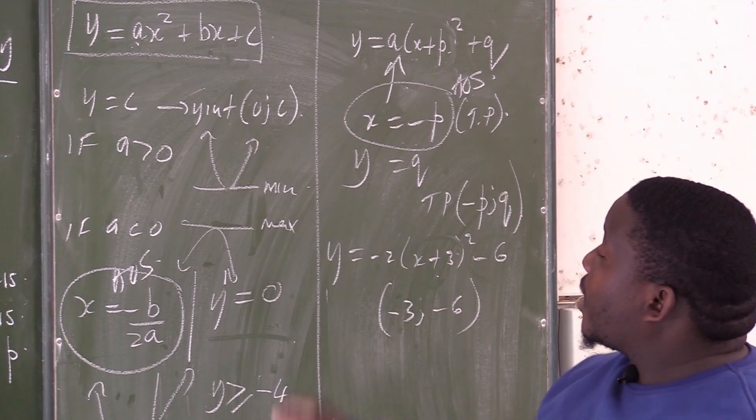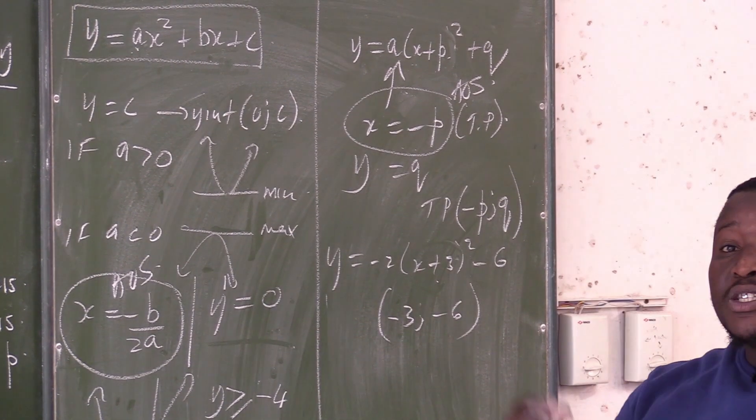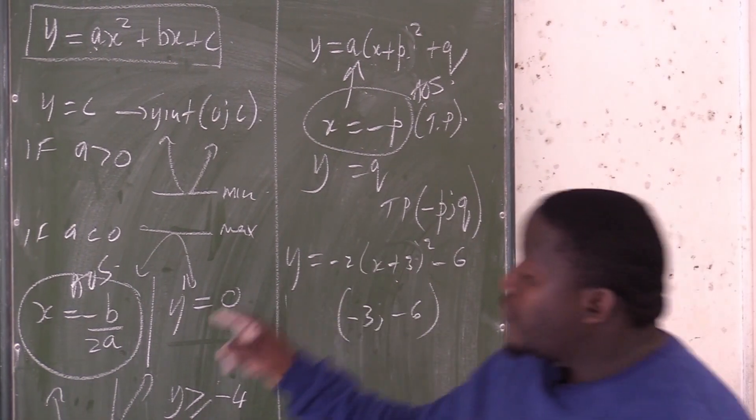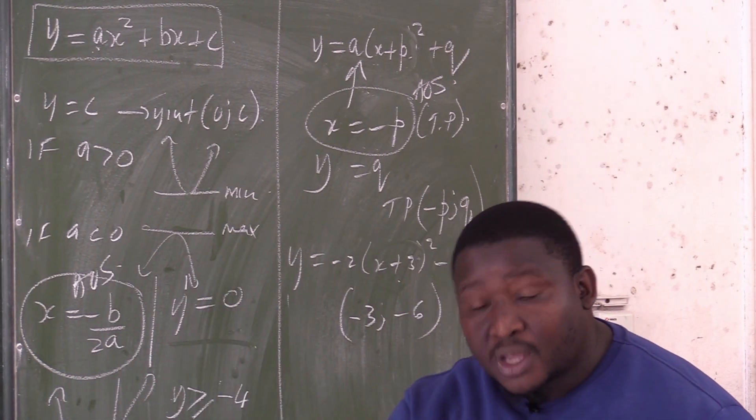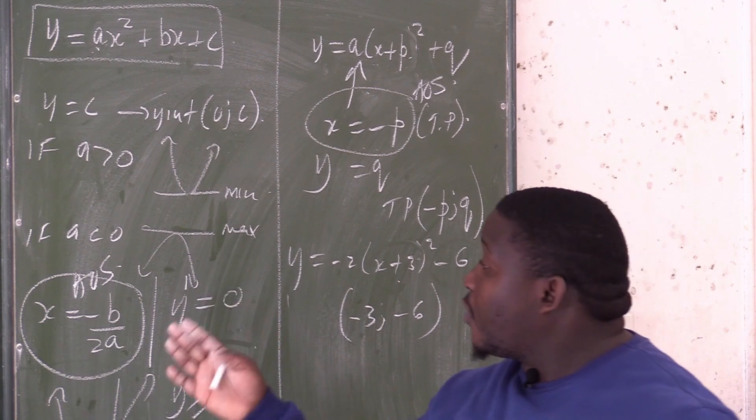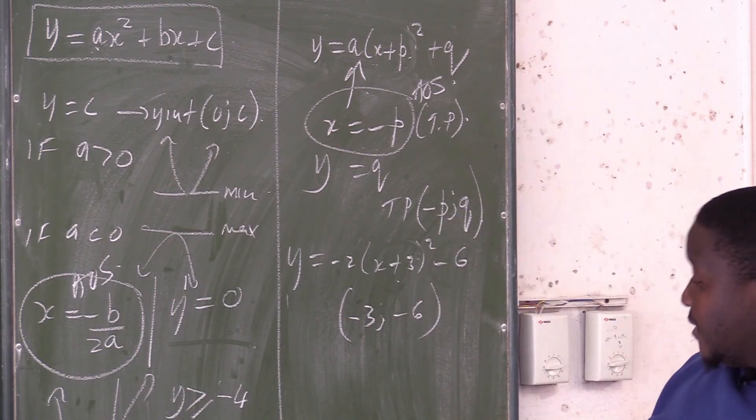So if they say to you, write down the equation of the axis of symmetry, you go to the graph, check the turning point. What is the turning point? What is the x value there? If x is 4, then x equal to 4 is the axis of symmetry.